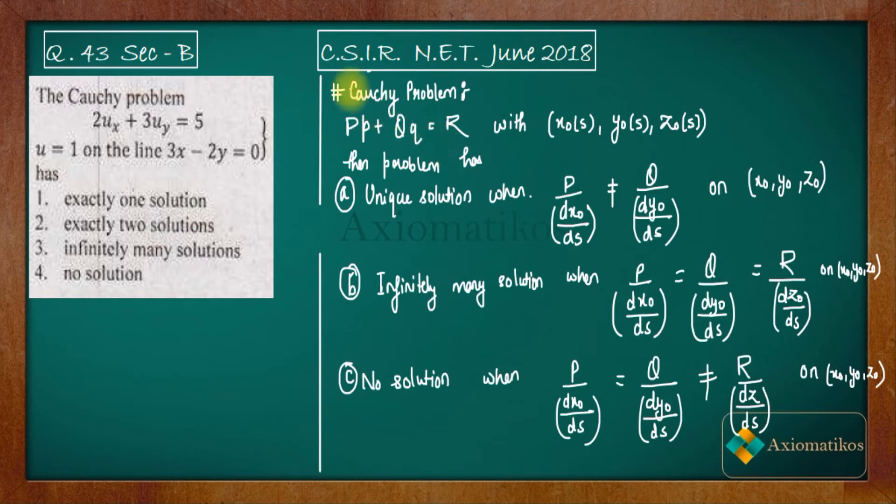So I have written that important note for you. Let us read this note and then we will solve this problem. An equation of this type where small p and small q represents the partial derivative of z. In this case we have u, otherwise generally we take z. So it's partial differentiation of z with respect to x and partial differentiation of z with respect to y. Then we are saying that it will have unique solution when this happens, infinitely many solutions when this happens, and no solution when this happens.